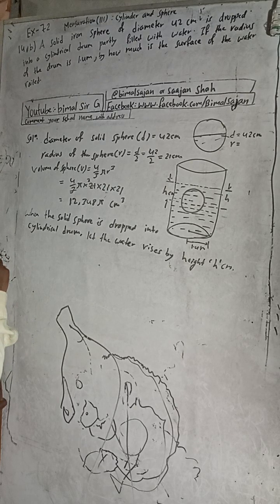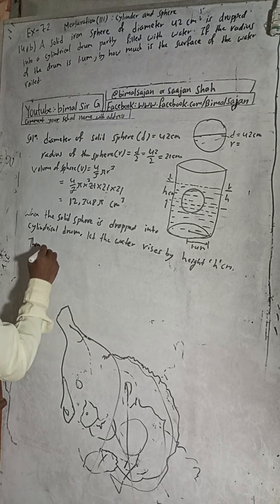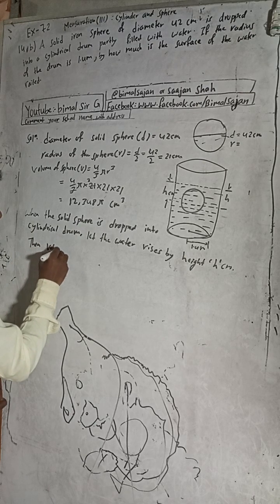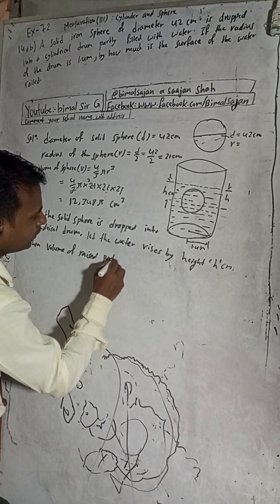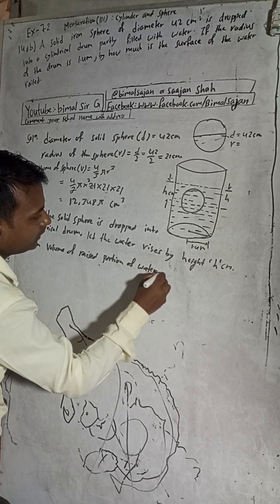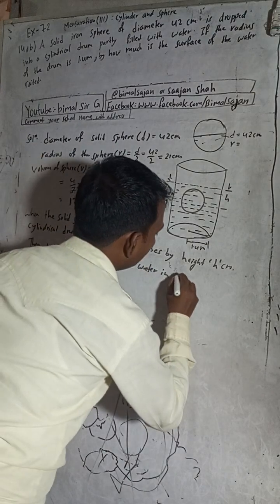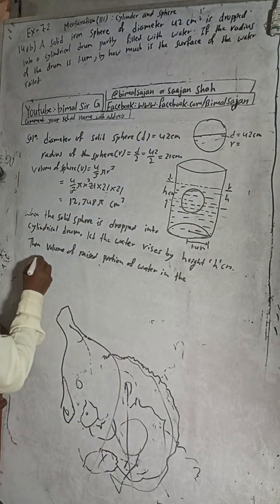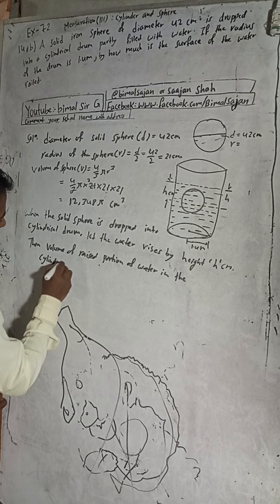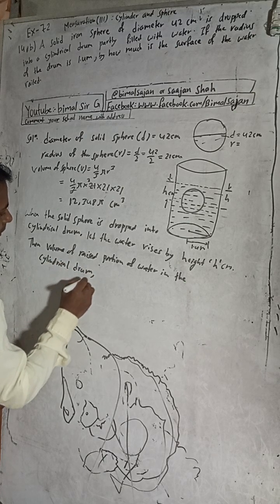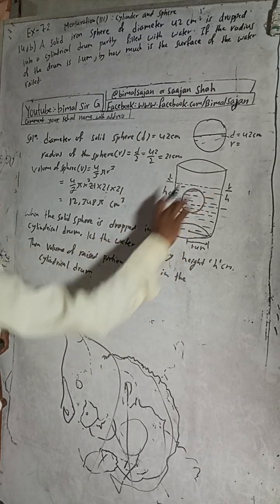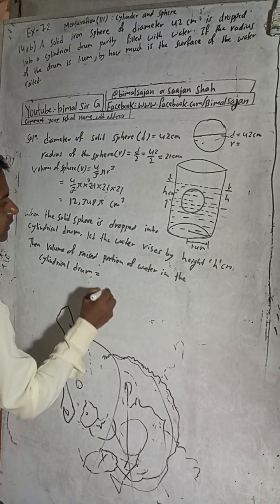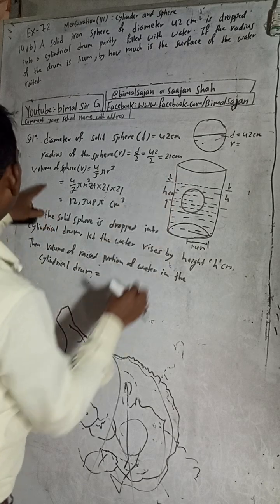Then the volume of the raised portion of water in the cylindrical drum will be equal to the volume of water displaced by the sphere, which equals the volume of the sphere.